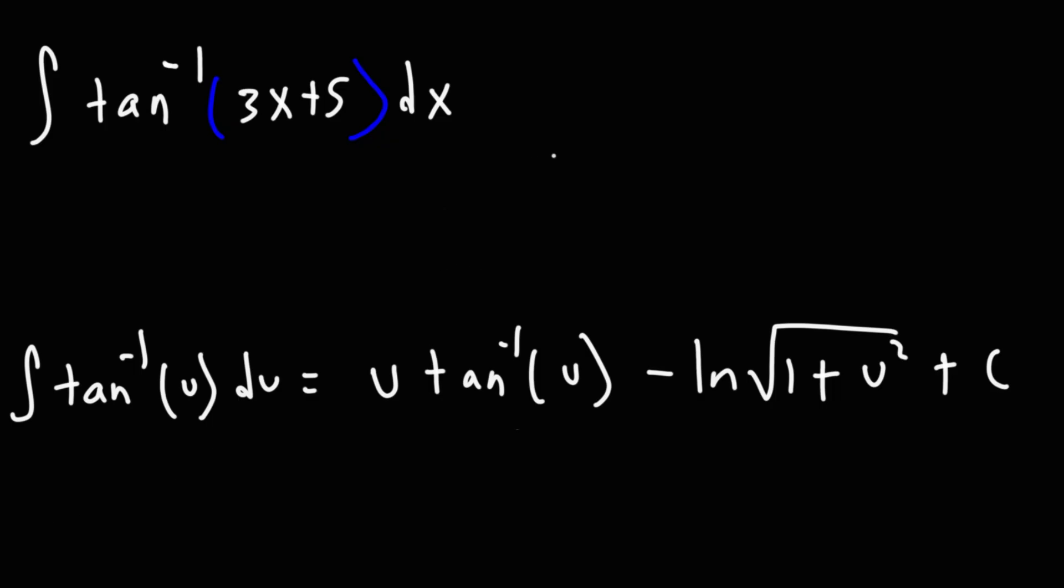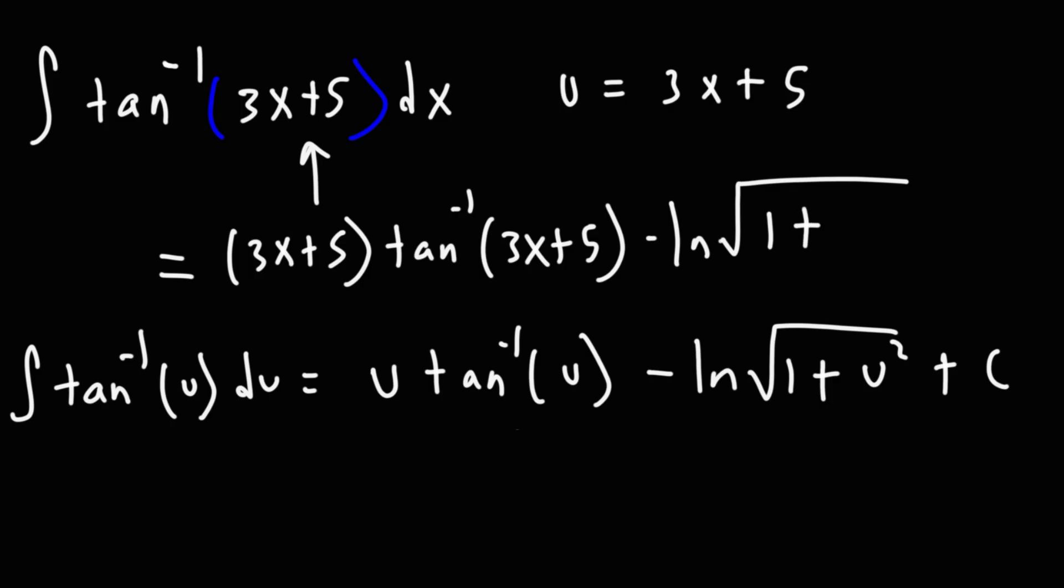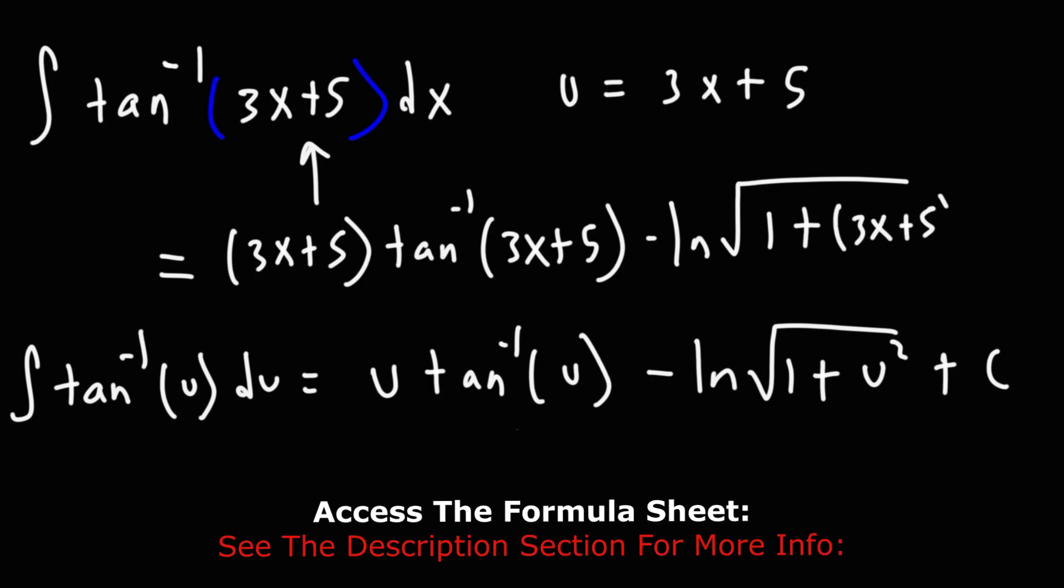So in this problem, u is going to be 3x plus 5. So this is going to equal u, 3x plus 5, arc tangent 3x plus 5, minus the natural log of the square root of 1 plus, this time, I'm not going to square it, I'm just going to leave it as 3x plus 5 squared, and then plus c.